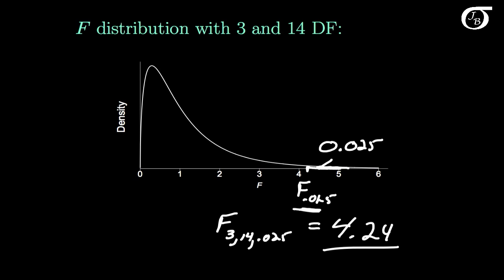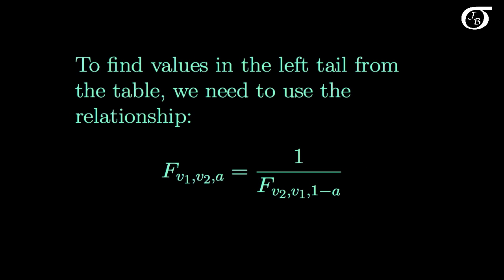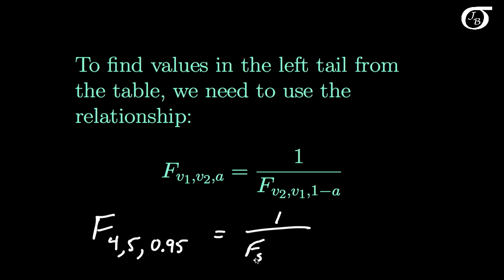That table gives areas and F values only in the right tail, but we can still use it to find values in the left tail because of a property of the F distribution. To find left-tail values, we use the relationship that an F value with ν₁ degrees of freedom in the numerator, ν₂ in the denominator, and area A to the right, equals 1 over the F value with the degrees of freedom flipped and area 1 − A to the right. For example, F₄,₅,₀.₉₅ = 1 / F₅,₄,₀.₀₅.